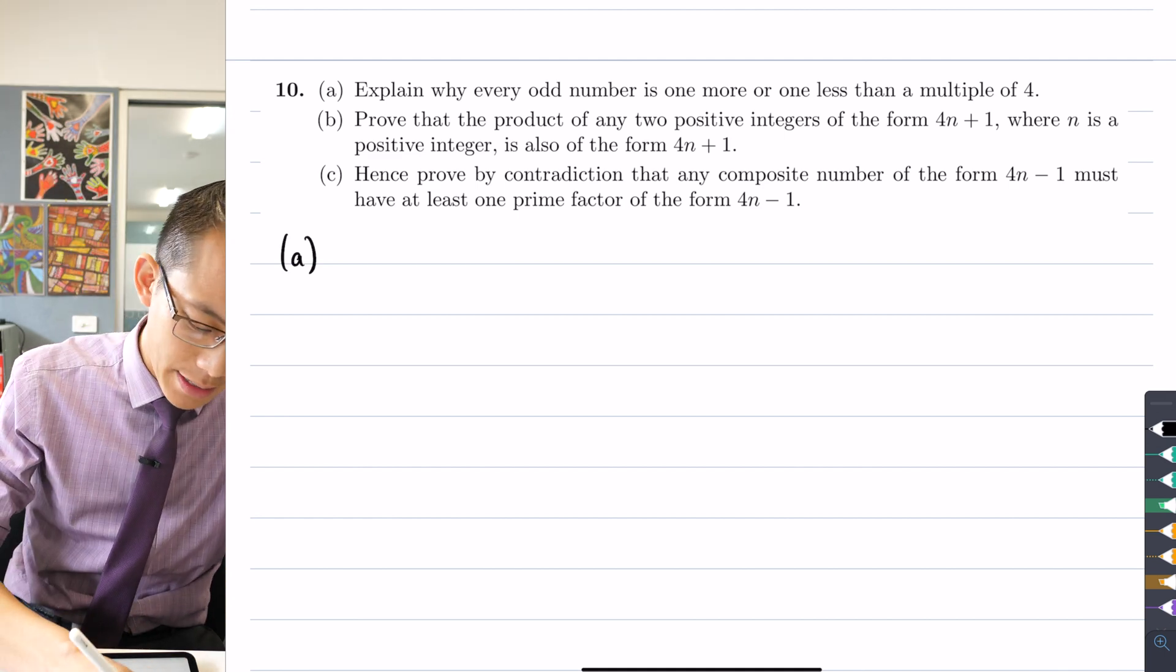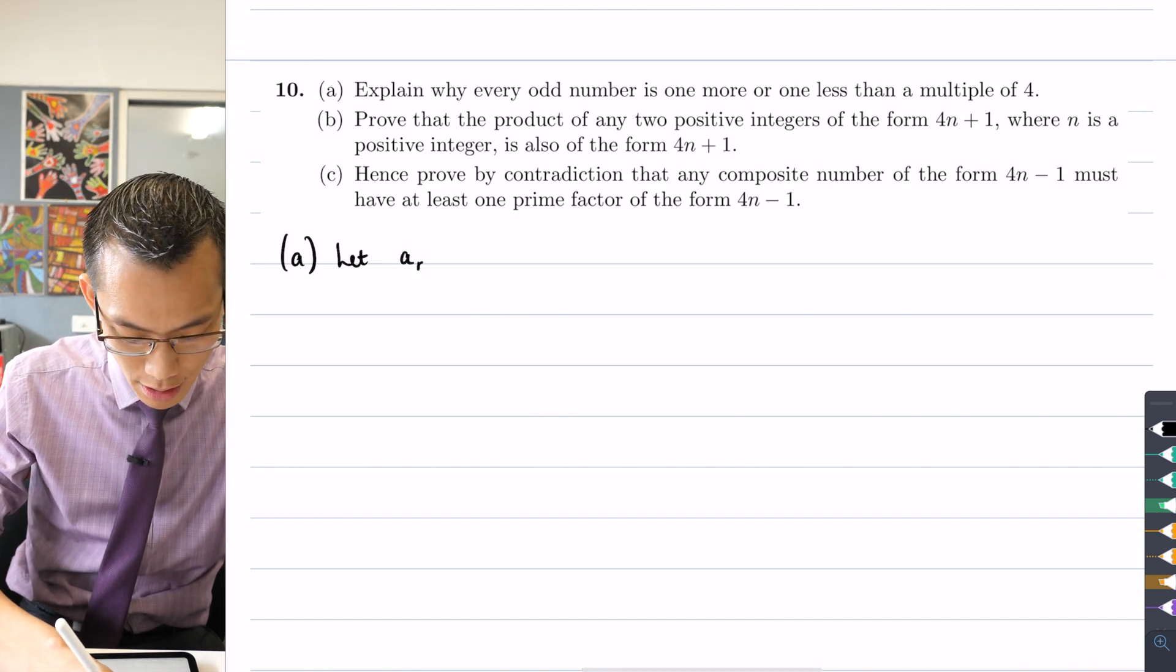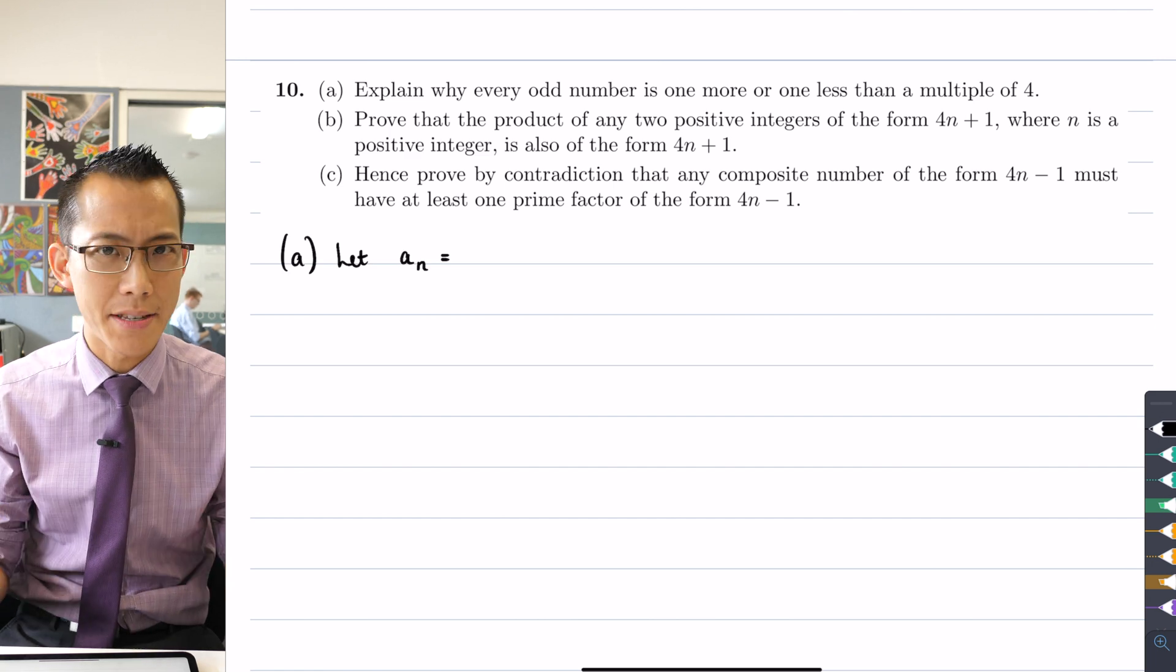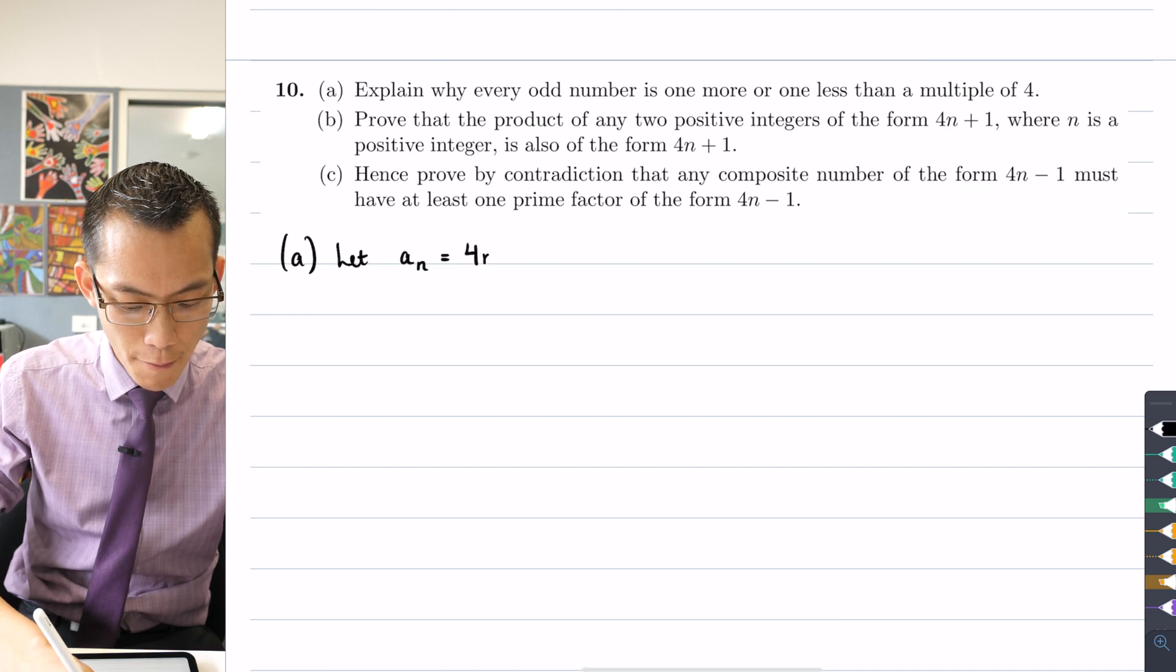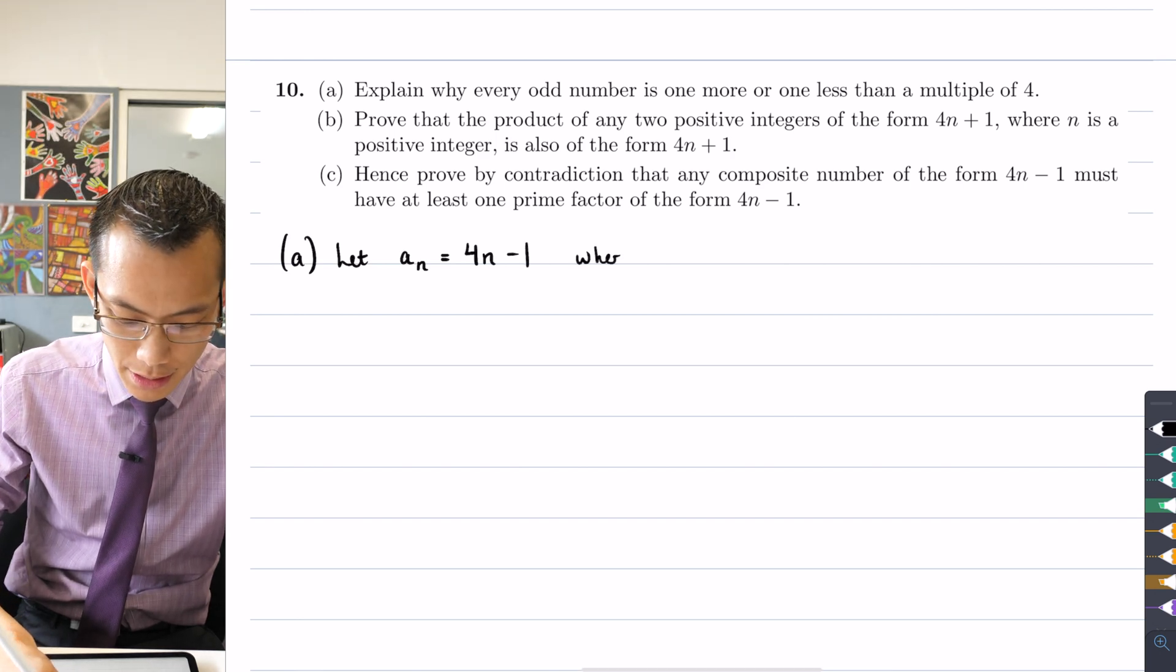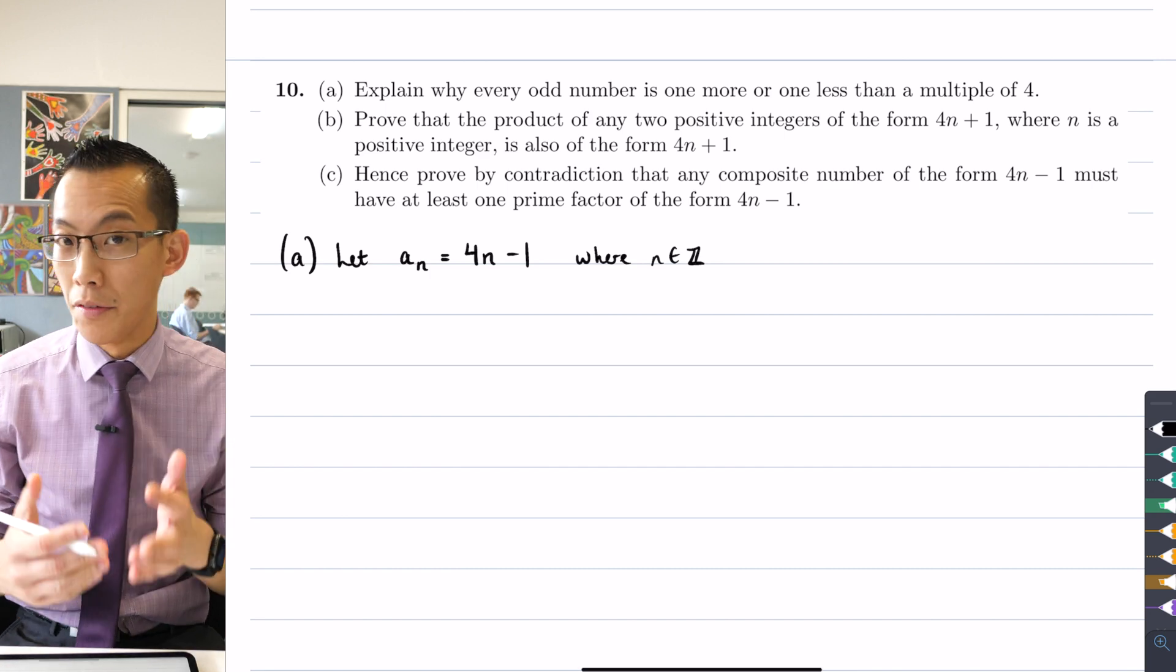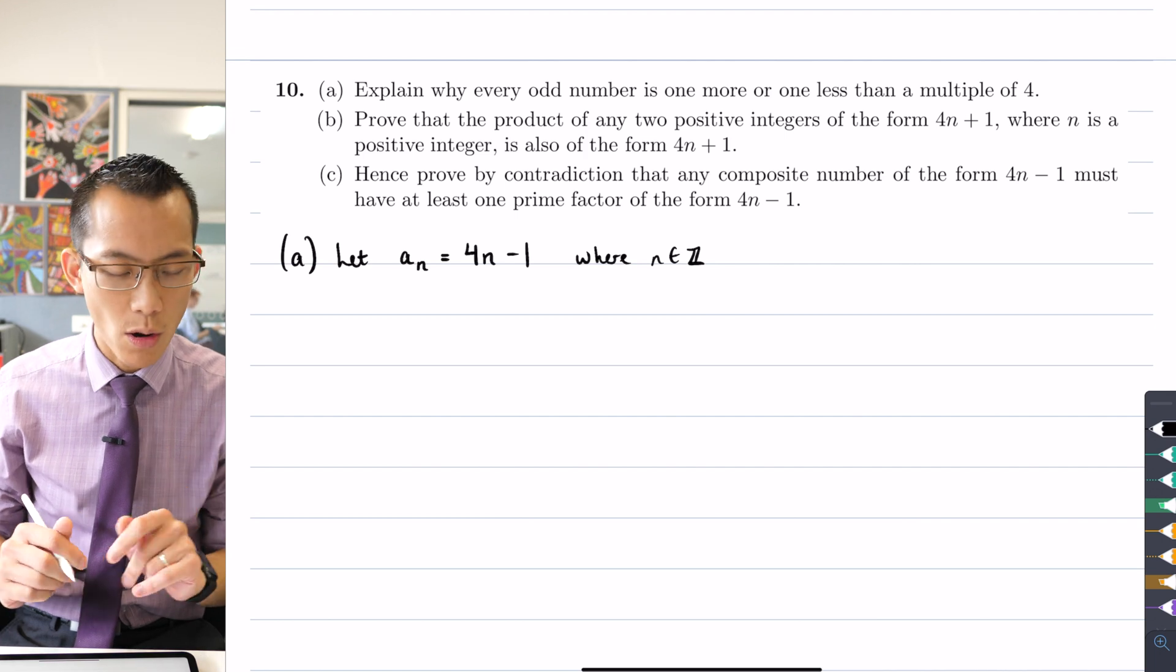If we say, let's introduce some sequence of numbers A sub N and let's define them as the ones that are all one less than a multiple of four. So a multiple of four would be of the form 4N, and one less than that would be 4N minus one, where N is some integer. Okay, so if we think of all the numbers of this form, what I'm going to do is think about the first sequence of numbers that I get out of this.